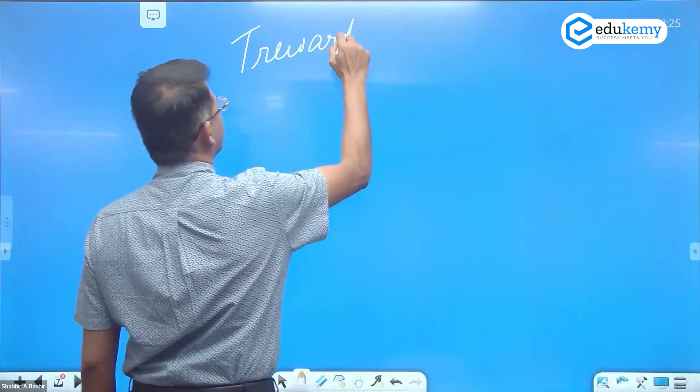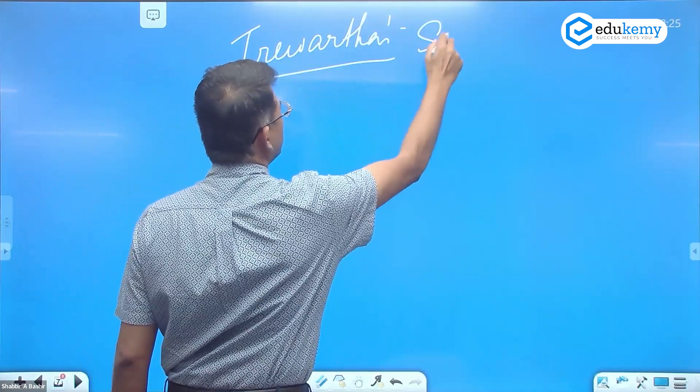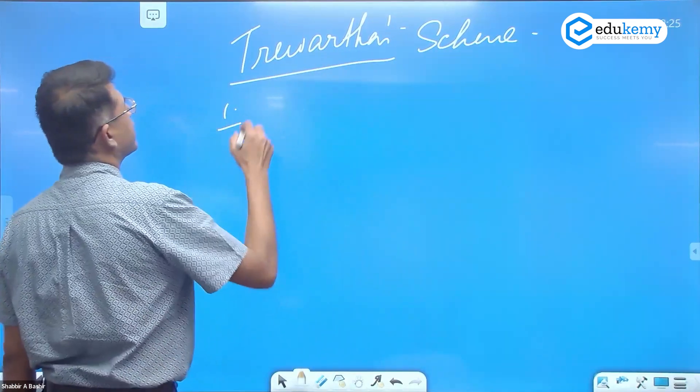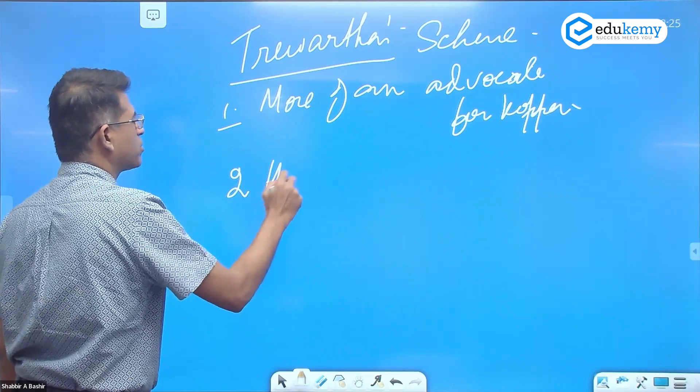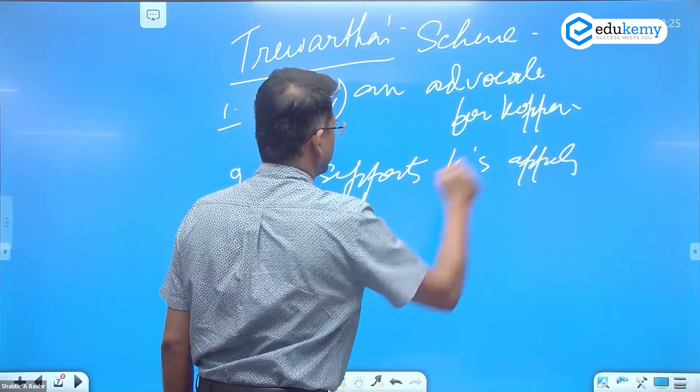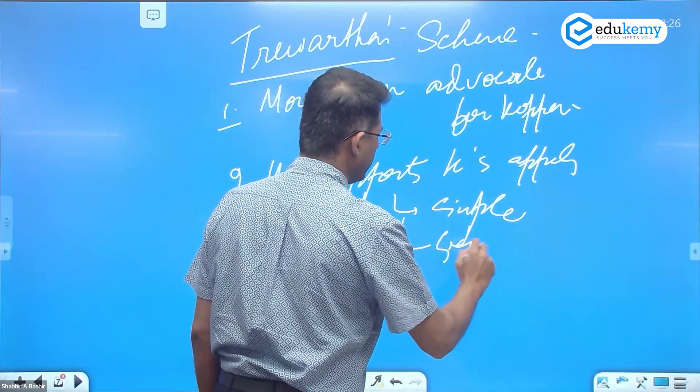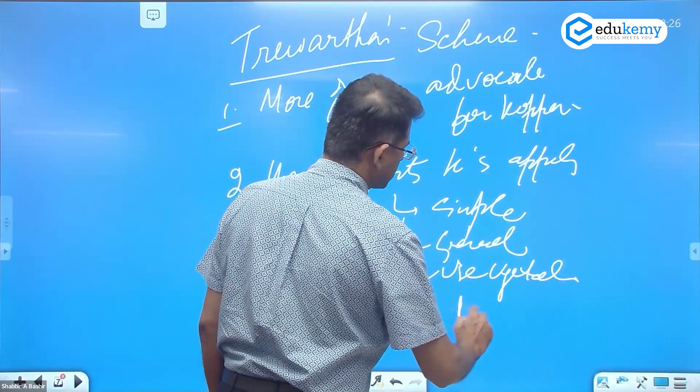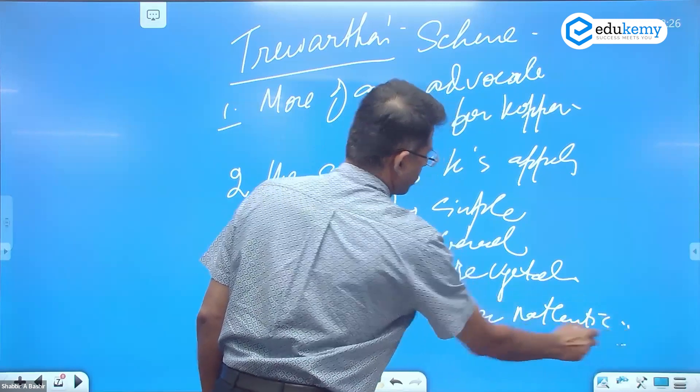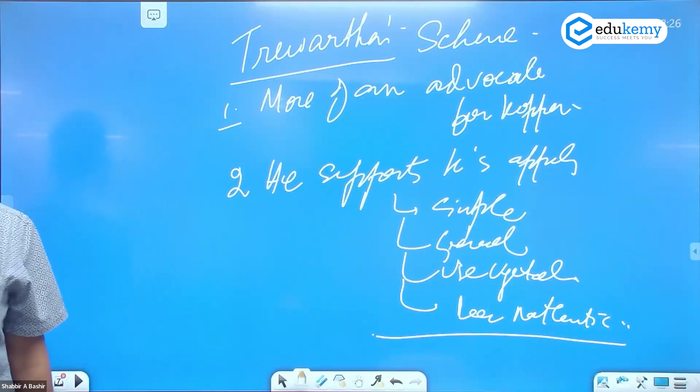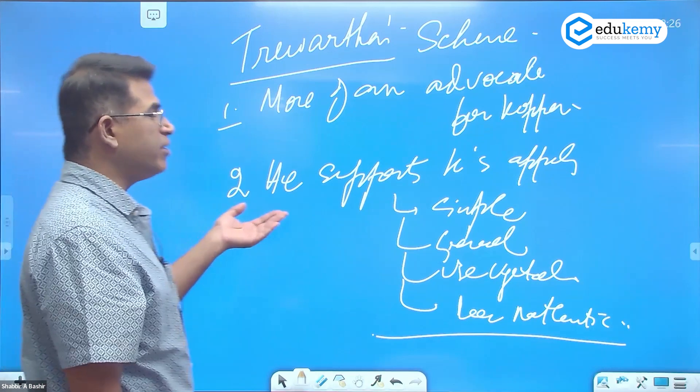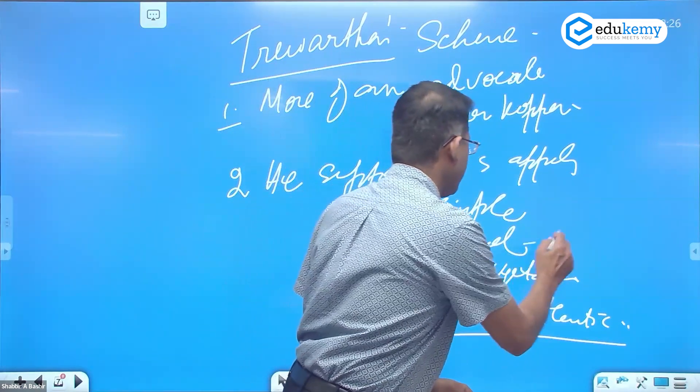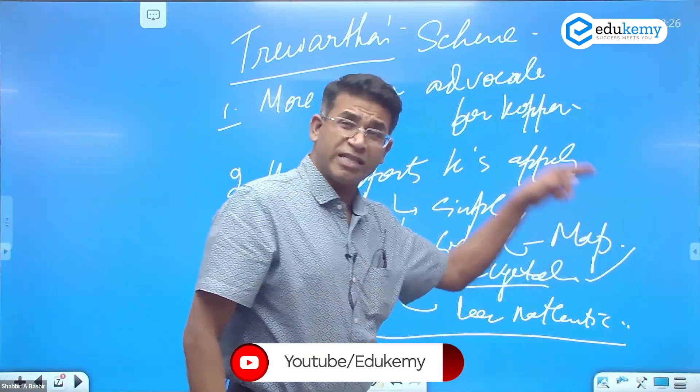So Thriwartha's scheme. Number one, I said that he is more of an advocate for Köppen. He supports Köppen's approach, which is keep it simple, keep the scheme simple, don't complicate the scheme, keep the scheme general, use vegetation basis. This is scientific.